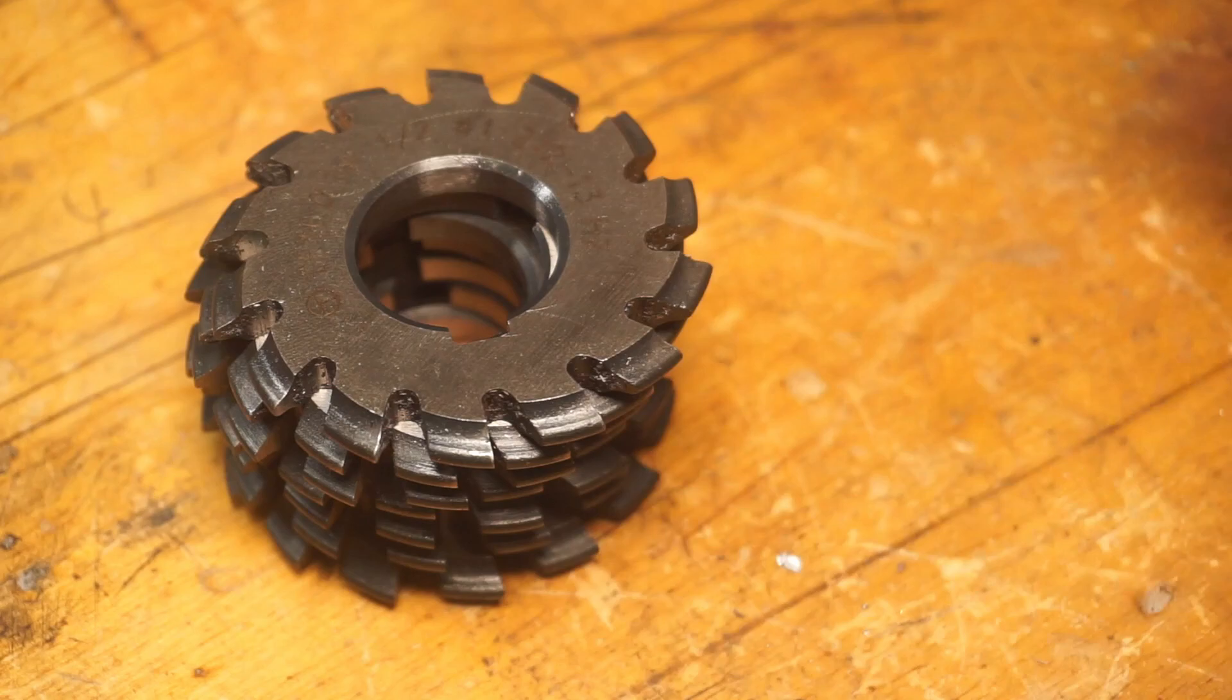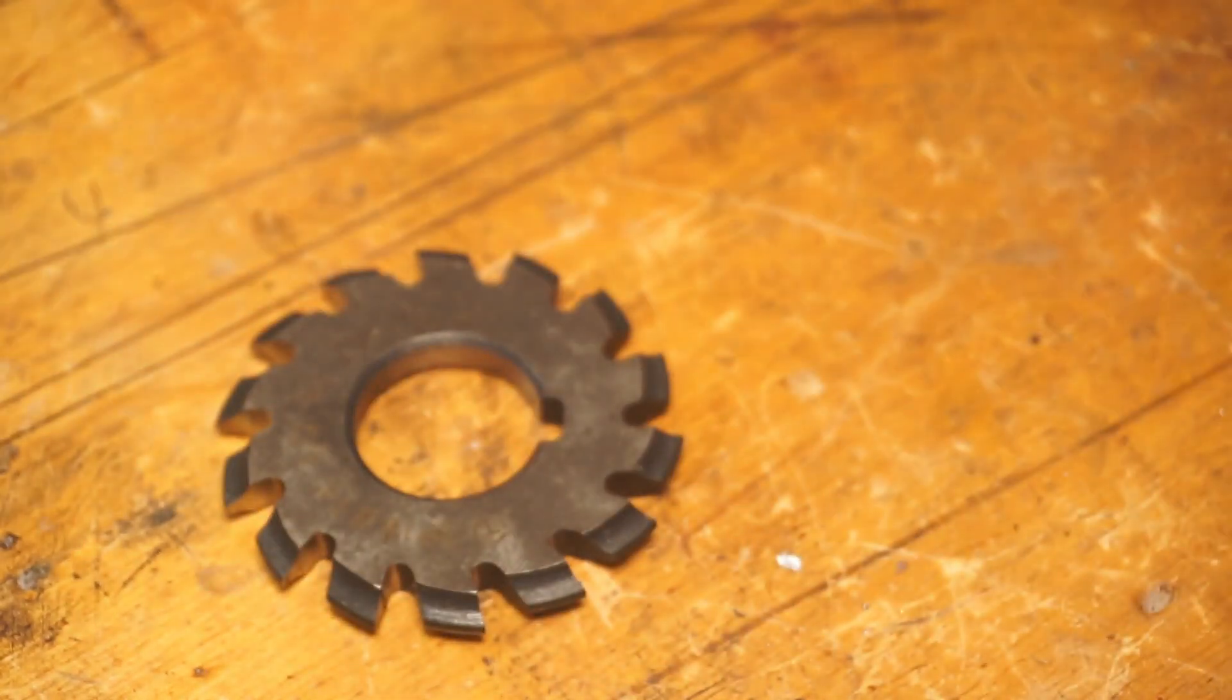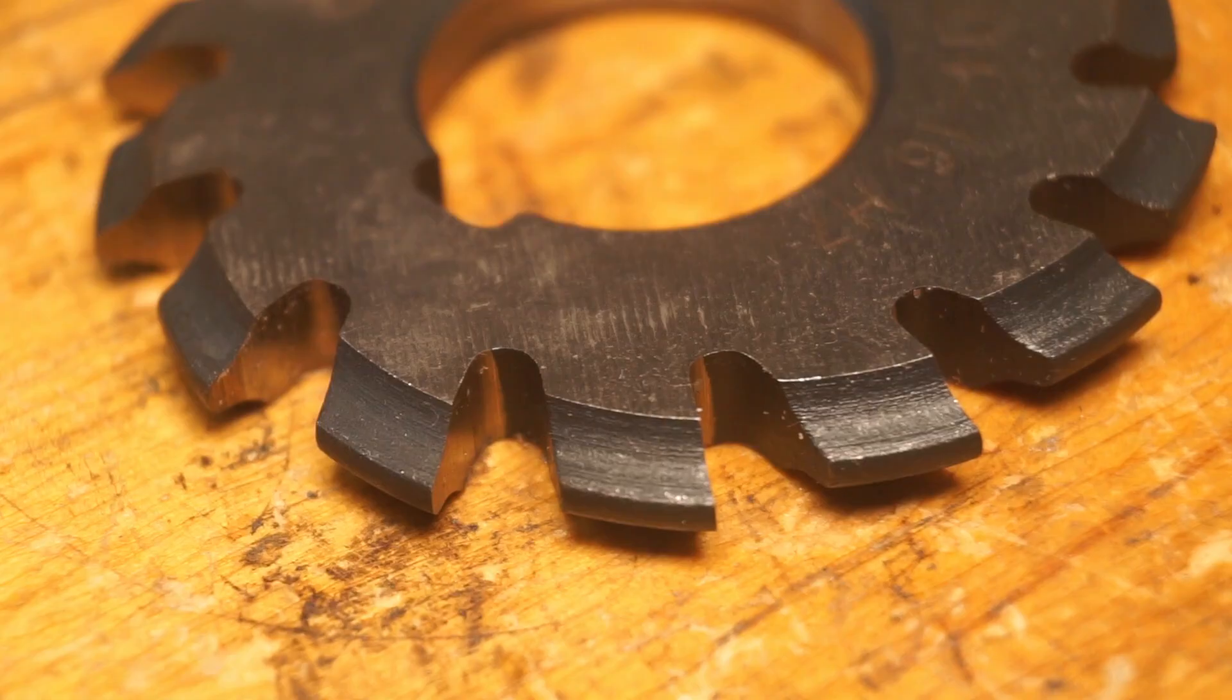And the way he did it, and the way I'm going to do it, is using what's called a gear cutter. So this gear cutter looks kind of like a saw blade, but it's got a special profile that corresponds to the gear that I'm going to be cutting.